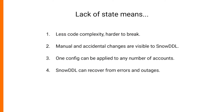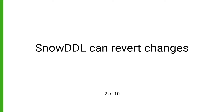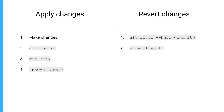The lack of state has many other positive implications from an architecture standpoint. For example, it is very easy to revert changes. Before applying any changes, you should always push them to Git first. After that, it makes it very easy to revert — you simply reset your Git repository to any point in the past and then run Snow DDL normally. Snow DDL will do its best to generate DDL commands dynamically to get back to the previous version of your config.